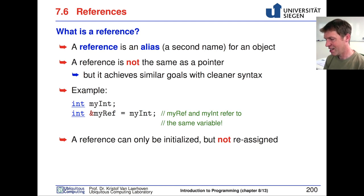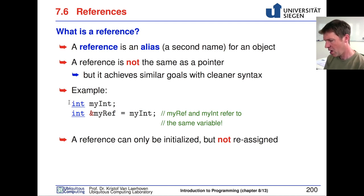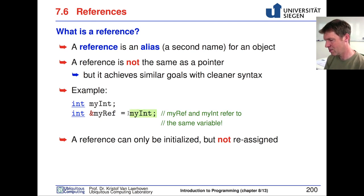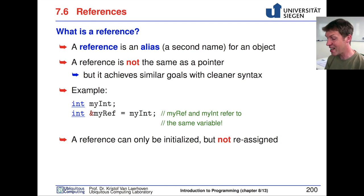A reference, indicated by the ampersand sign, is basically just another way of naming a value that holds exactly the same value in memory. For example, you have myInt as an integer — somewhere in memory four bytes are assigned for it with a certain value. Once you create myRef as a reference to myInt, you have two variable names pointing to exactly the same memory location. They are aliases: if myInt or myRef is reassigned, both will reflect the change.